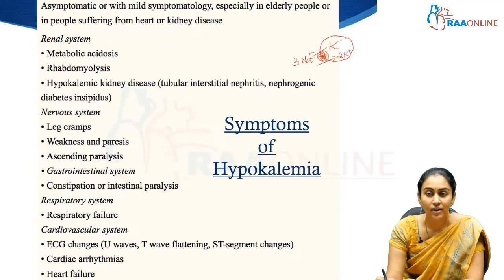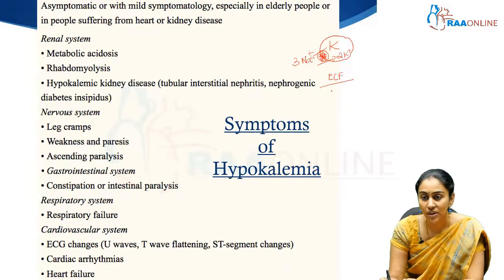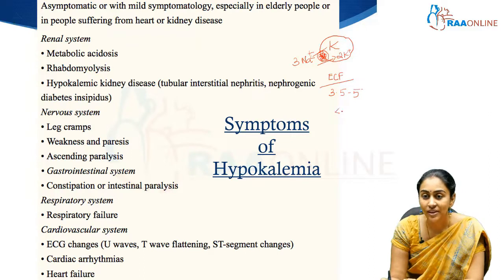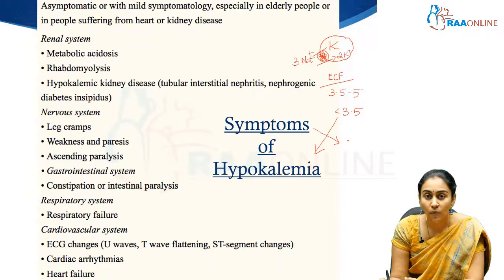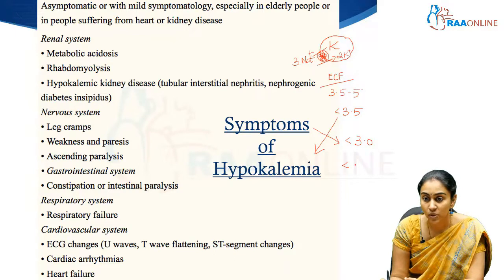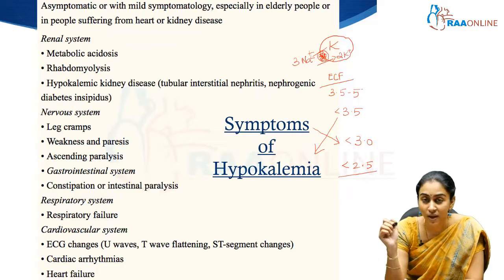Because potassium is going to be extremely low in the extracellular fluid, the normal serum potassium level is about 3.5 to 5 milliequivalents per liter. Any potassium level less than 3.5 milliequivalents per liter is referred to as hypokalemia. However, symptoms more commonly occur when the potassium level drops below 3, and when it drops below 2.5, the patient develops severe hypokalemia.